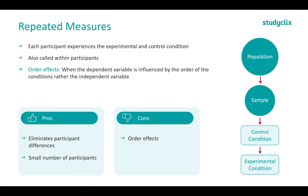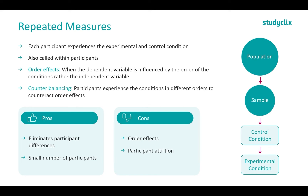To take order effects out of our experiment, we do counterbalancing. Participants experience the conditions in different orders to counteract order effects. We split our sample into two groups: one group does the control condition first, the other does the experimental condition first, and then you switch them. So everyone in the sample still experiences both conditions, but you're switching the order, and that helps to negate some of the order effect.